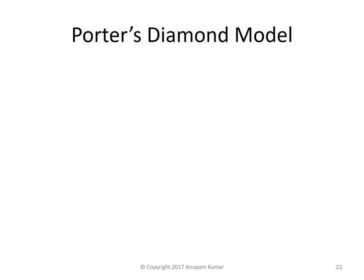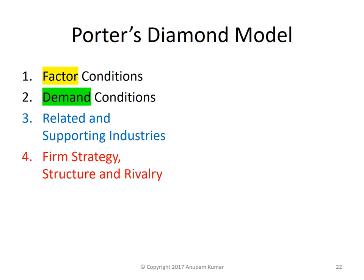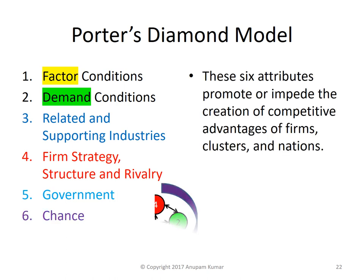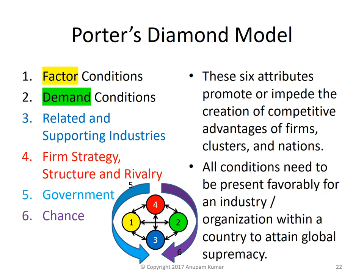So, as per Porter's diamond model, we have the factor conditions, the demand conditions, related and supporting industries, firm strategy, structure and rivalry, government, and chance. These six attributes promote or impede the creation of competitive advantages of firms, clusters, and nations. All conditions need to be present favourably for an industry or organisation within a country to attain global supremacy.